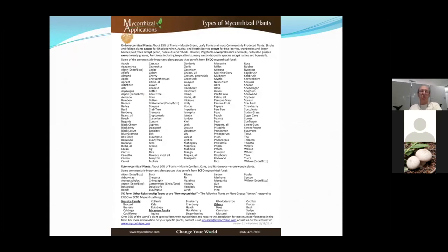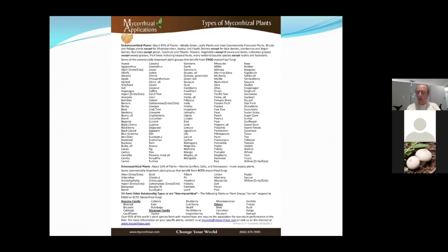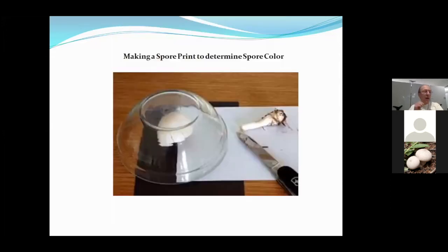Pretty much most of the things we eat and almost all familiar trees are mycorrhizal and won't grow well without the fungus. Food plants like broccoli, Brussels sprouts, cabbage, cauliflower, blueberries, cranberries, huckleberries, strawberries, and many others require them. About 85 percent of all land plants require the fungus in their roots. Orchids, notably, will not grow at all without the proper fungus infecting their roots.